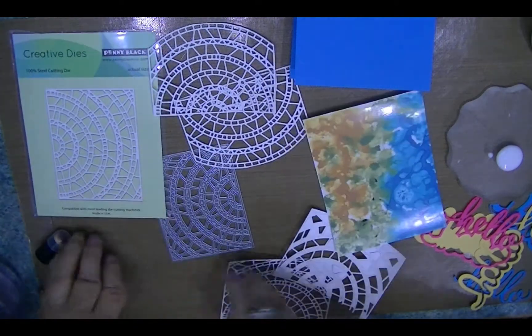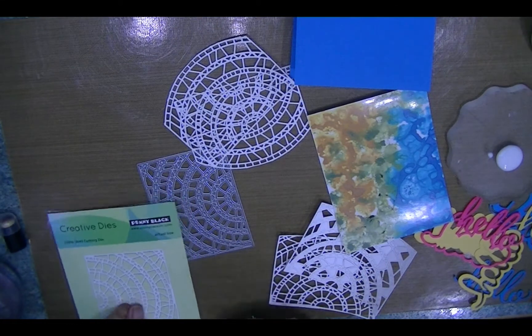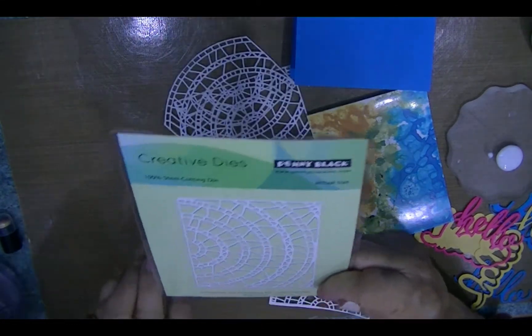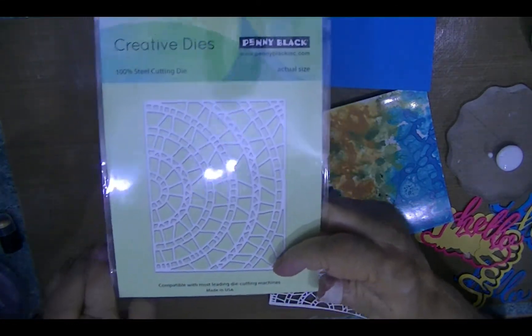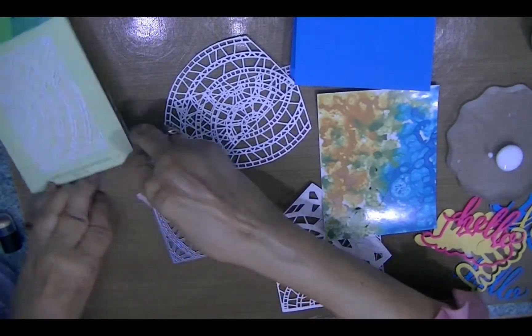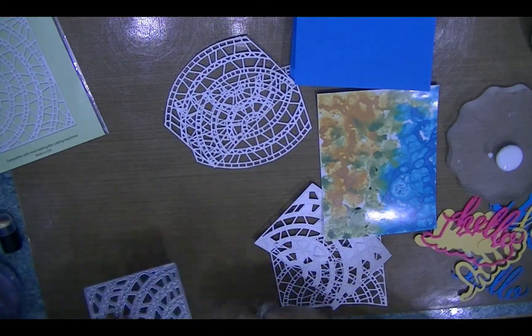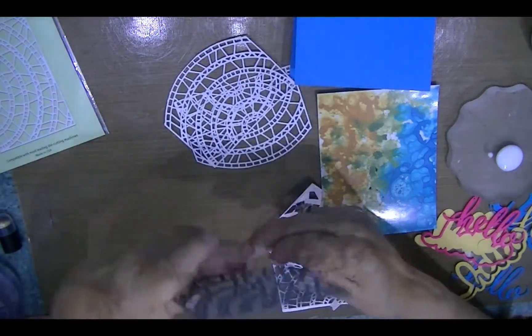The first die I'm starting with today is this one, Penny Black, and that's the actual size on the card. This is the die, it's a half circle.